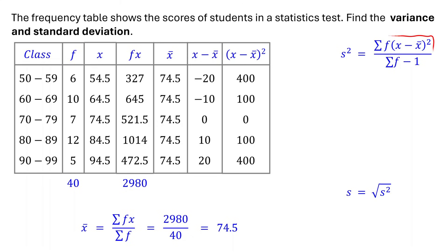Next, multiply each squared difference by the corresponding frequency. For the first class, 6 times 400 equals 2400. For the second class, 10 times 100 equals 1000. Do the same for the rest of the classes.